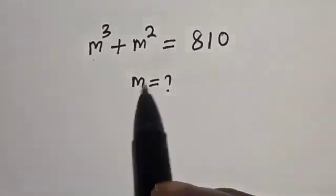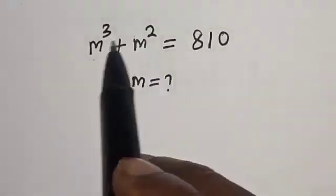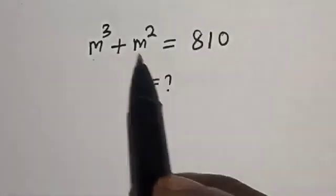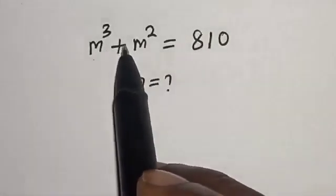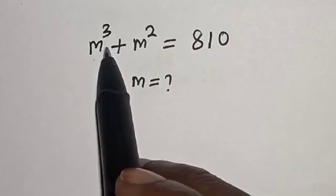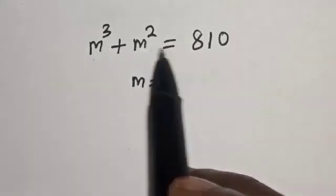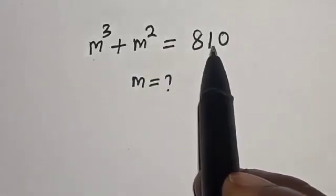Hello, welcome to Magist. In this class we want to find the value of m from the given equation m³ plus m² is equal to 810.